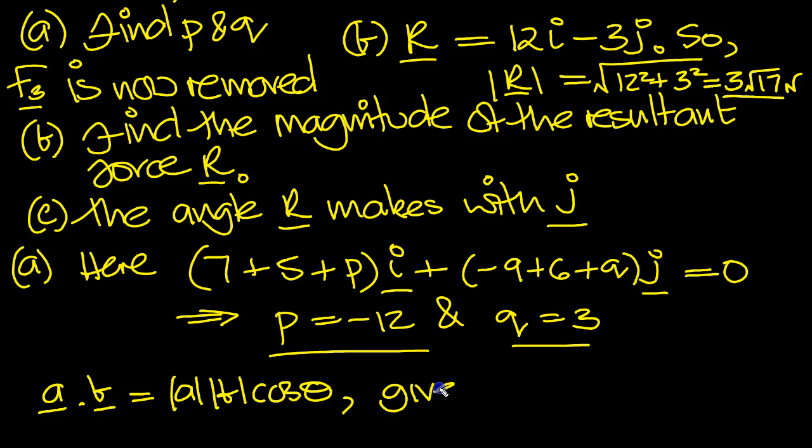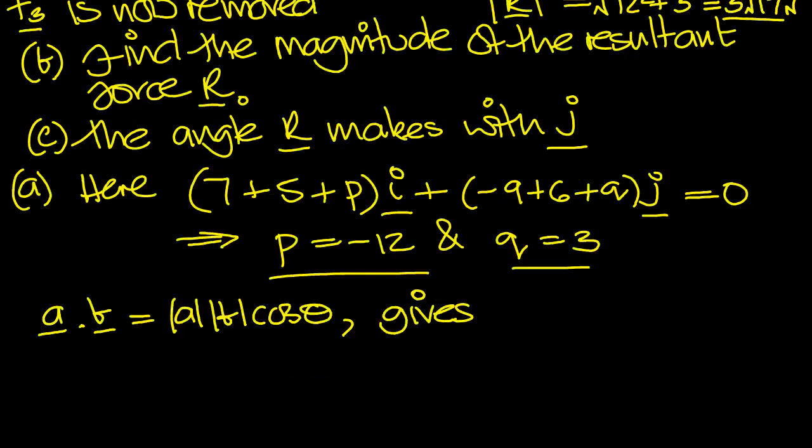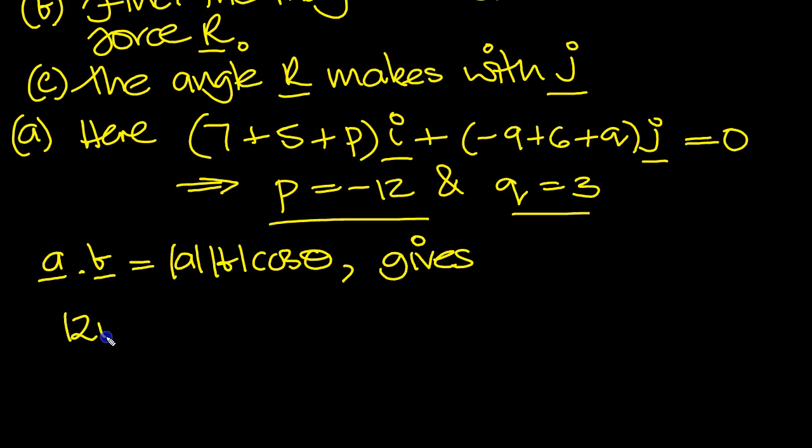So this rule then, the dot product rule gives, we'll use R, B is J, A is R. So 12 minus 3j then.